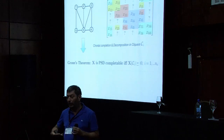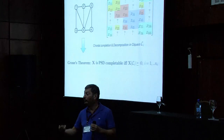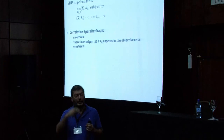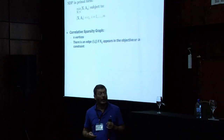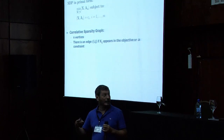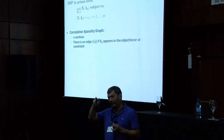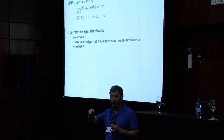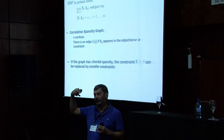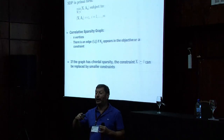You have this theme where things are related to the topology of an underlying graph. Can I move beyond matrix completion? Yes. Suppose I give you an SDP in primal form: minimize the inner product subject to trace constraints. You form the correlative sparsity graph for the problem with n vertices, and you have an edge if variable X_{ij} appears either in the objective or in one of the constraints. If the graph has chordal sparsity, instead of having a huge single semi-definite constraint, you can have a collection of smaller semi-definite constraints. This matters because of the n-to-the-6 scaling.